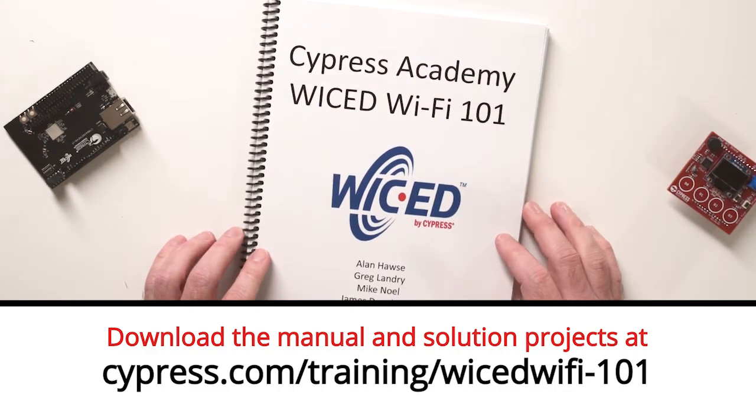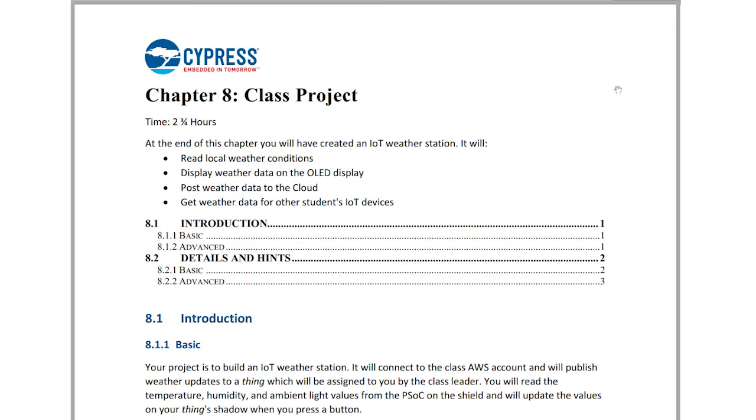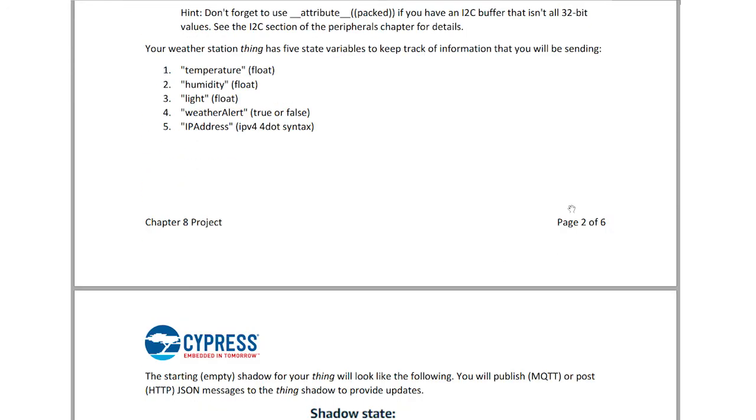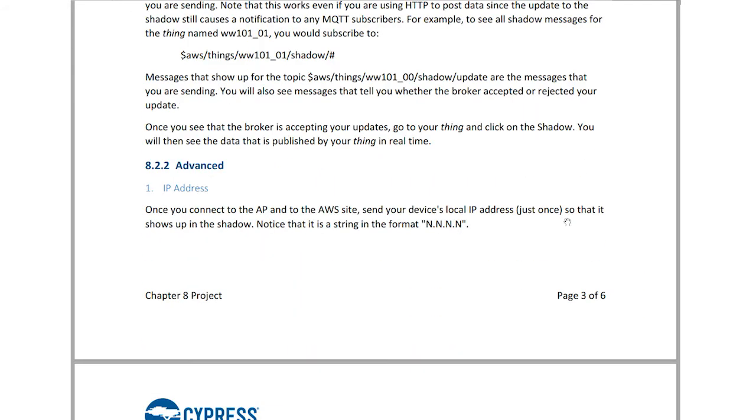I'm not going to go through the firmware for this project since we want you to use this as an exercise to practice your skills in building IoT devices. Additional details about the project can be found in the manual for lesson eight. The solution firmware is provided along with the other exercise solutions, but I would recommend that you attempt to do this project on your own first without looking at the solution to see how well you understand each of the lessons. If you do want to try out the solution project, you will have to get your own certificates since we don't provide the certificates that we use in the AWS class.